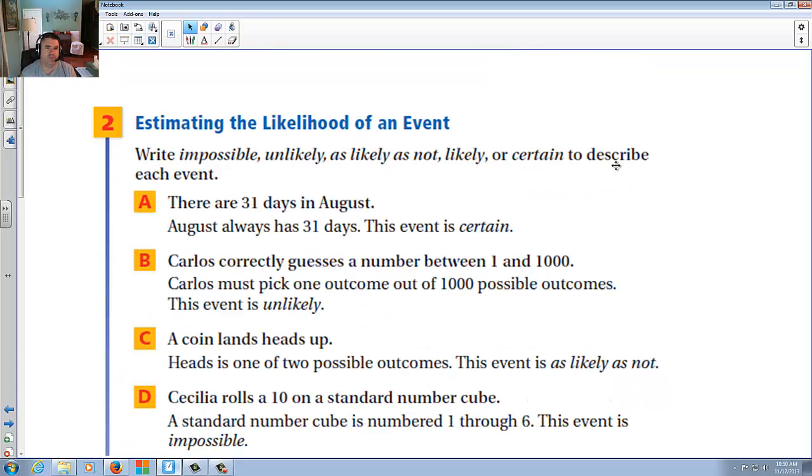Estimate the likelihood of an event. We'll say impossible, unlikely, likely as not, likely, or certain. There are 31 days in August. Well, since August always has 31 days, that is certain. So as long as there's an August, there'll be 31 days. Let's say Carlos correctly guessed a number between 1 and 1,000. Well, you could pick a number between 1 and 1,000, but the chance of you actually nailing it is 1 to 1,000, so it's very unlikely. Not impossible, but unlikely.